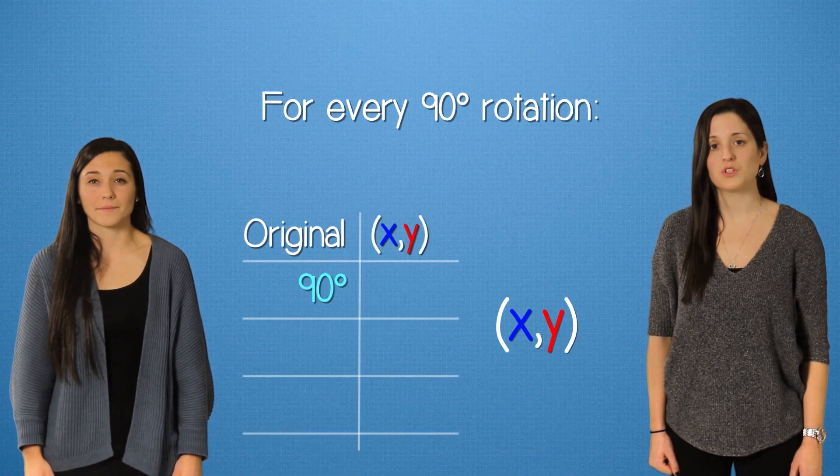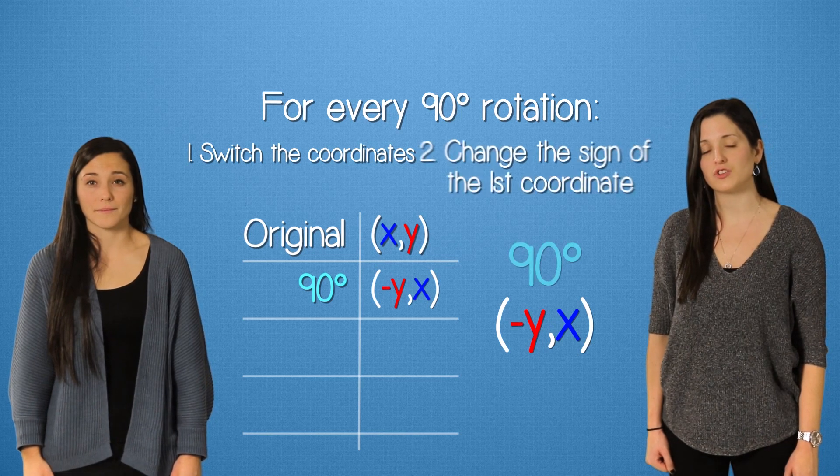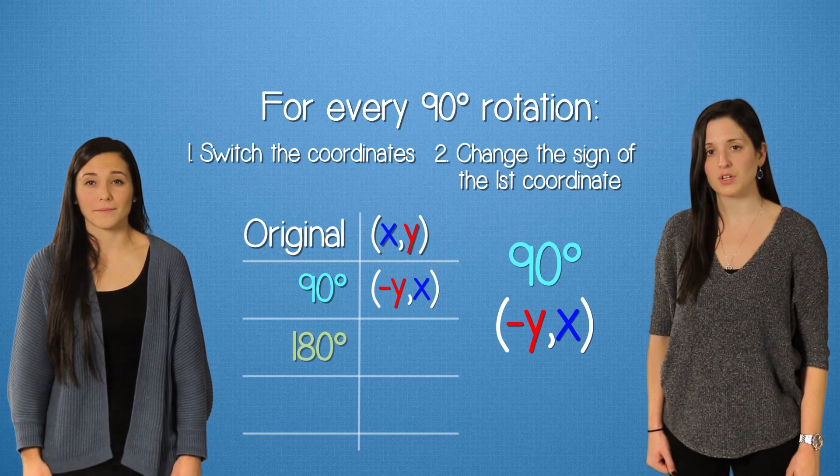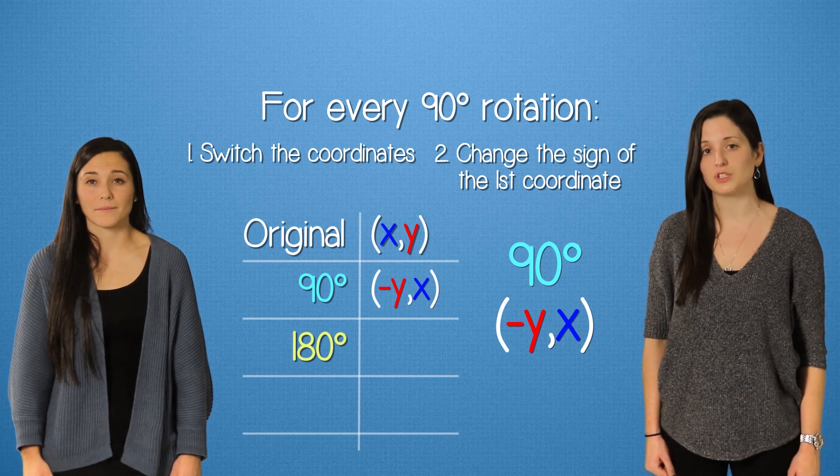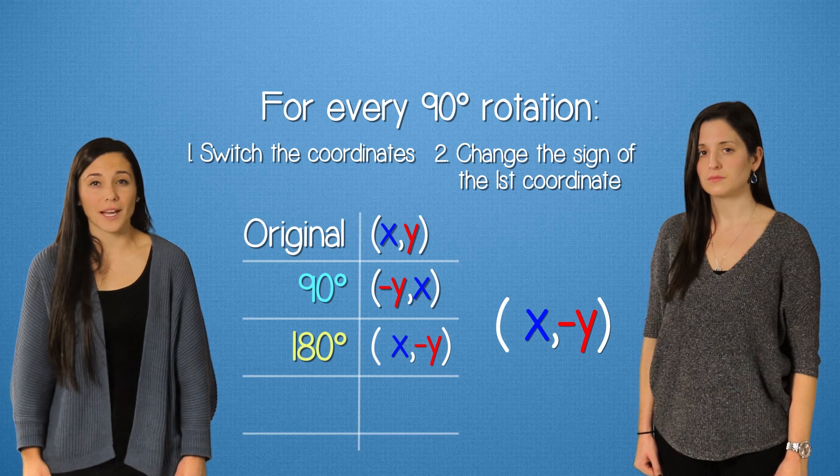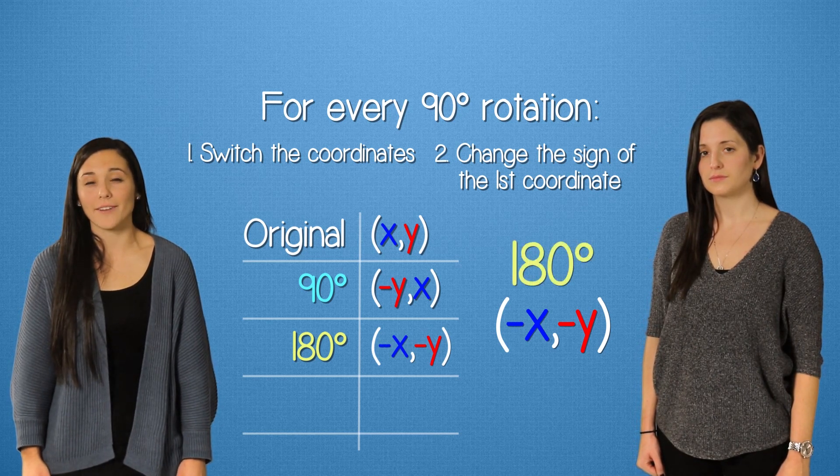One last thing to help remember the rules. When we rotate 90 degrees, we switch the coordinates and change the sign of the original y. So now when we rotate another 90 degrees to 180 degrees, we do it again. Negative y goes to the back, the x comes up front, and we change the sign. Negative x, negative y.